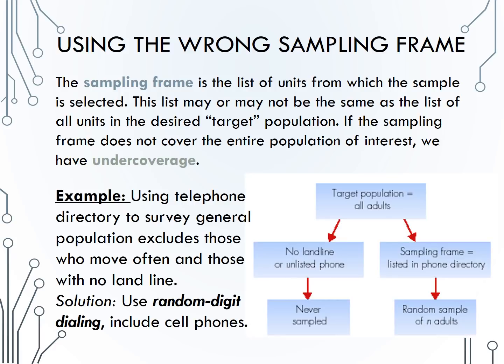A good example of a wrong sampling frame are telephone surveys. Most often telephone surveys are targeting all adults, but there are many adults with no landline or an unlisted phone number. Those people would never be sampled, and therefore we are missing them in our sample, and our sample will no longer be representative of all adults.